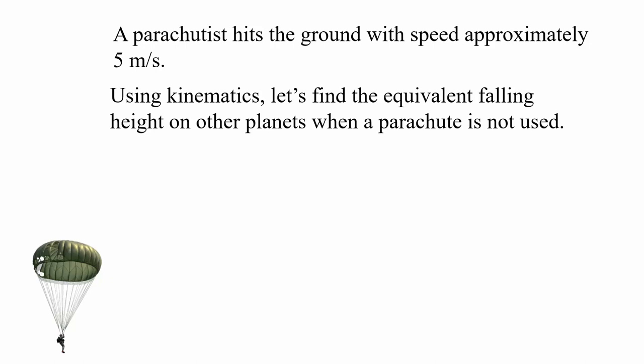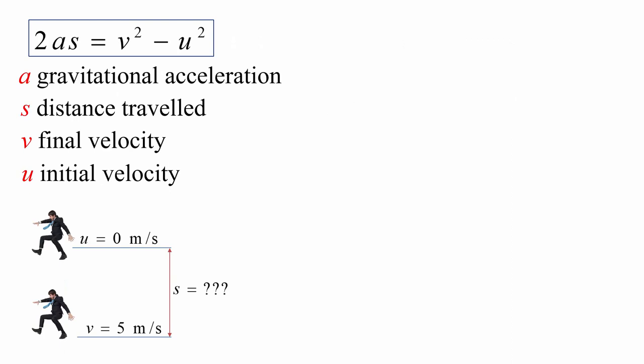And to do that, we are going to use one of the formulas from kinematics, which is the study of motion of objects. Here's the formula we're going to use. 2As equals V squared minus U squared, where A is the gravitational acceleration of our planet or Moon. S will be the distance travelled, in this case the distance fallen. V will be the final velocity and U will be the initial velocity.